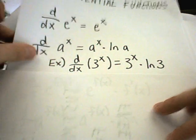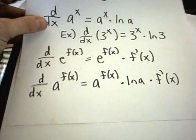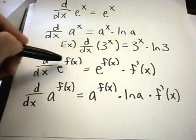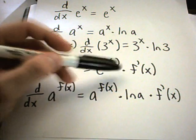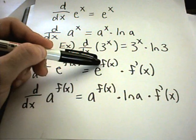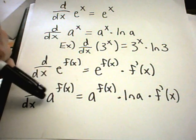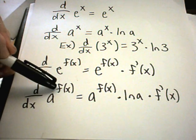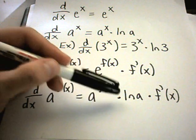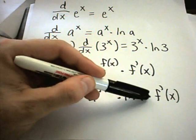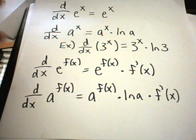And a little more in general, it says if you take the derivative of e raised to something more complicated, you get e to that more complicated stuff times the derivative of that complicated stuff. Likewise, if you have a raised to some complicated stuff, the derivative of that is a to the complicated stuff times ln of a. But again, you have to multiply by the derivative of that stuff.